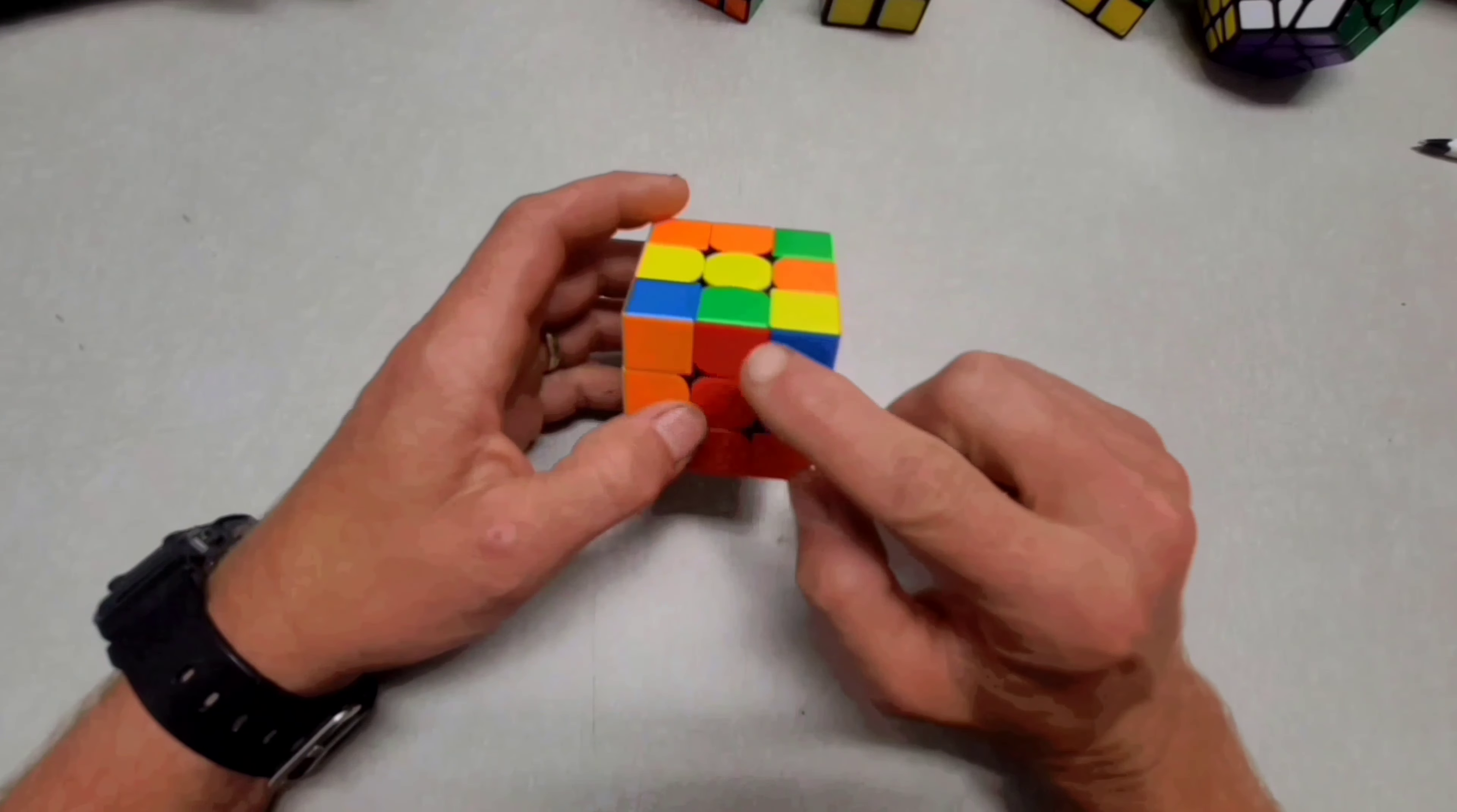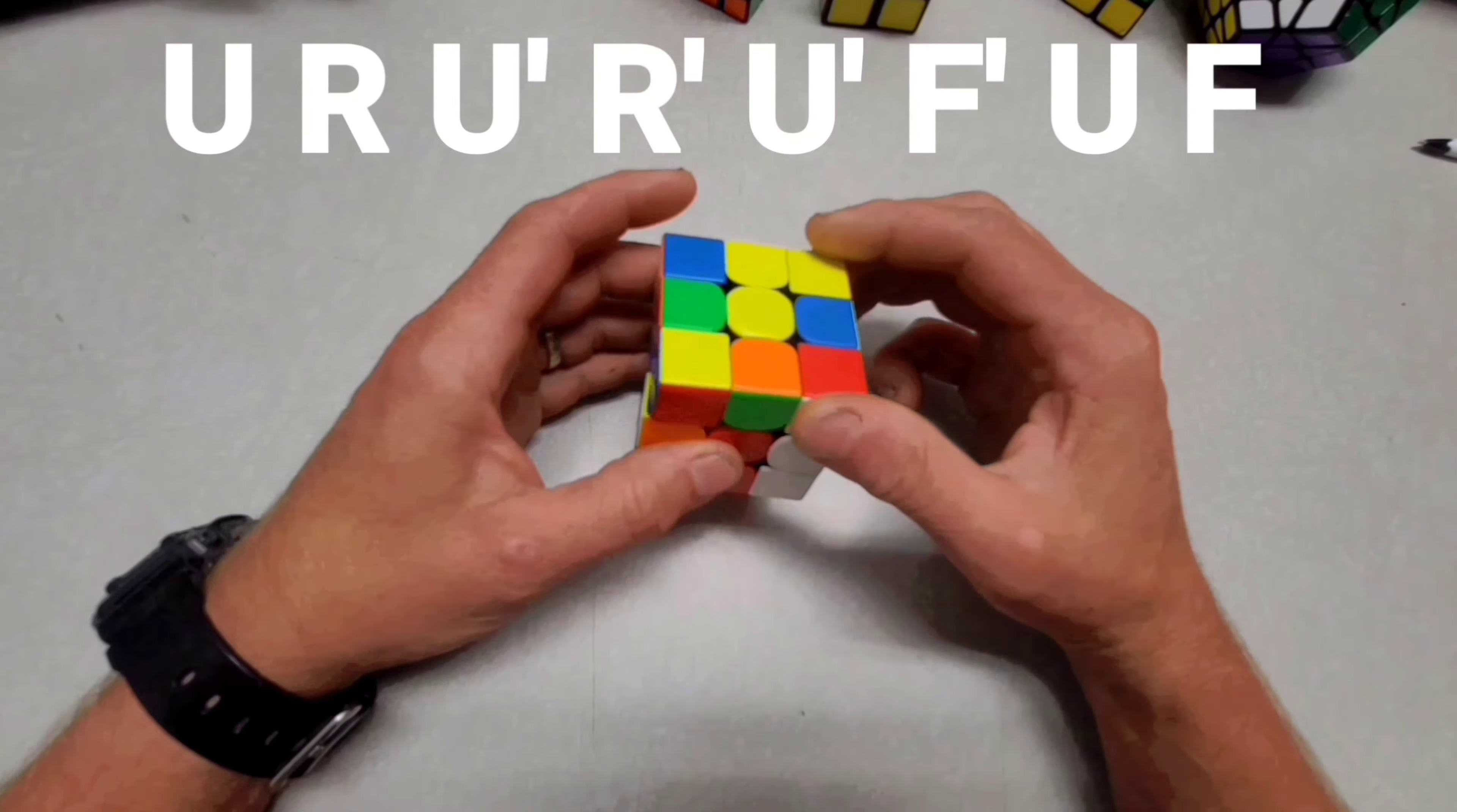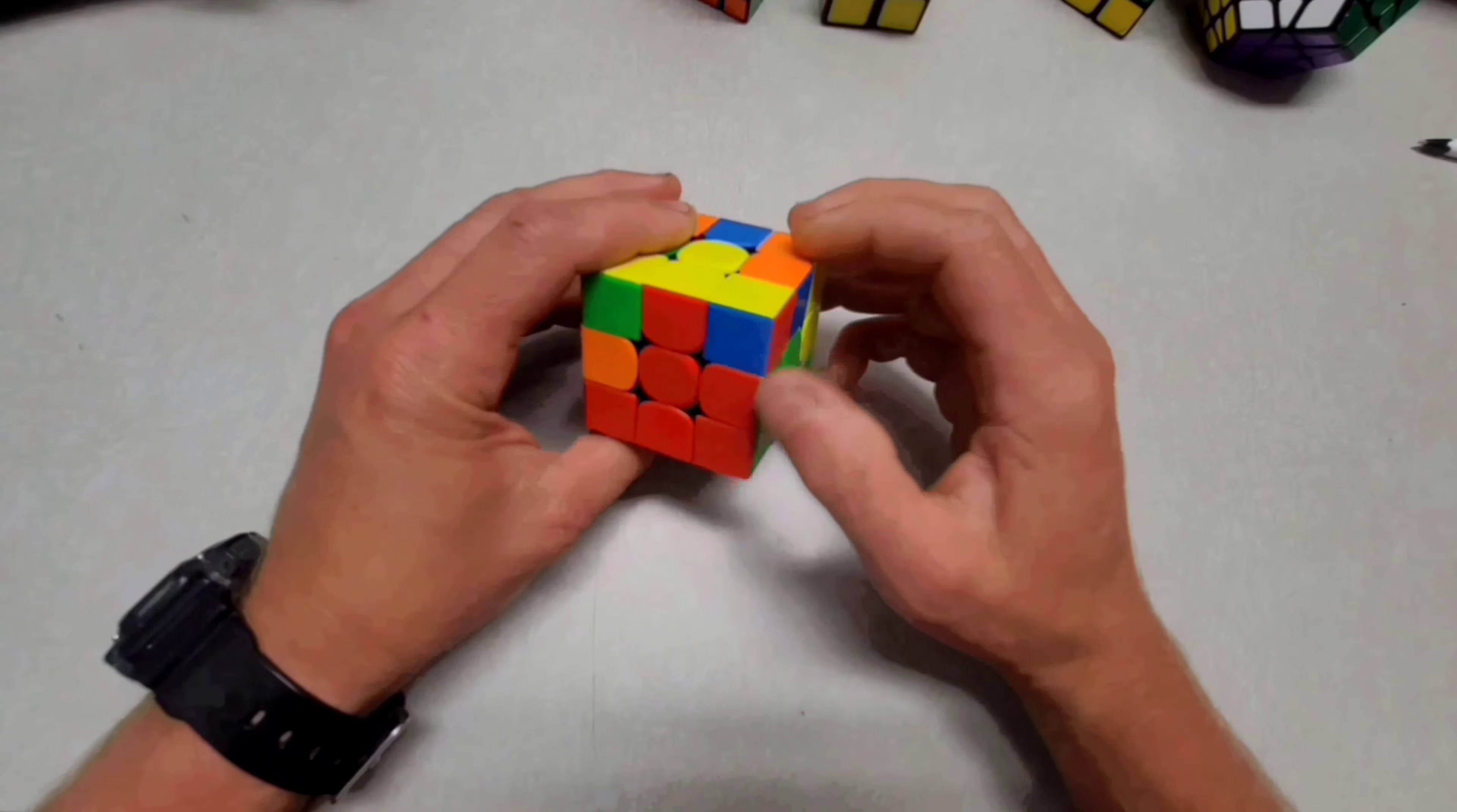And you're going to need to know this because it's going to help you on every cube you ever decide to solve. It's really important. So to put this piece over here, it goes like this. It goes up, right, and it goes U prime, right prime, U prime, F prime, U and F. See how it went there?